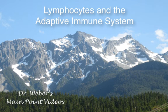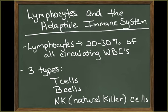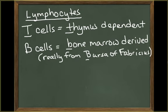This segment is on the lymphocytes and the adaptive immune system. Lymphocytes account for 20% to 30% of the circulating white blood cells. Three classes of lymphocytes that circulate in the body are the T cell, the B cell, and the NK or natural killer cell.